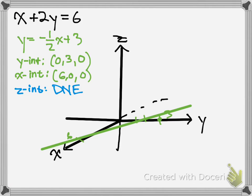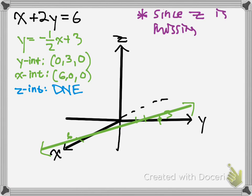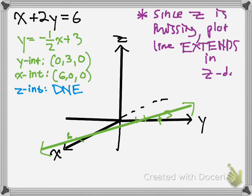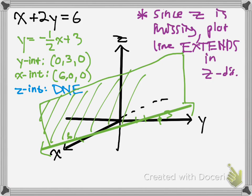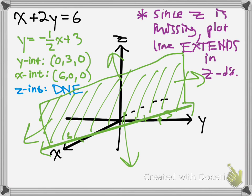But we're not done yet, because this is a 3D graph. Since there's no z-intercept, the graph is not just a line — it's more than that. Since z is missing, the plot line extends — that's the big key here — extends in the z direction. That means this graph would go up and out of the page. This is a plane coming out of the page at an angle — the plane goes up this way, out this way, down this way, over this way. So this is a 3D image.